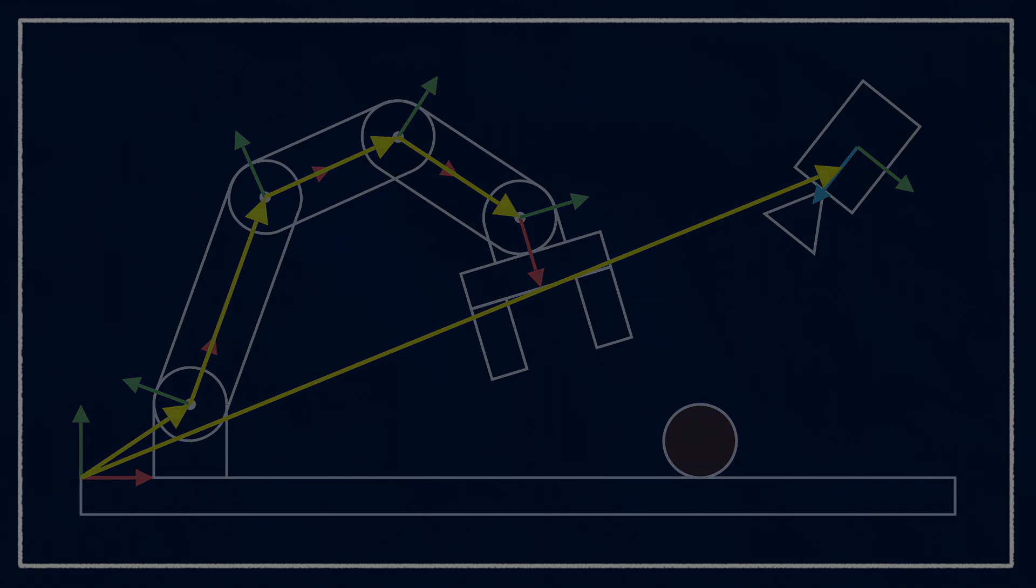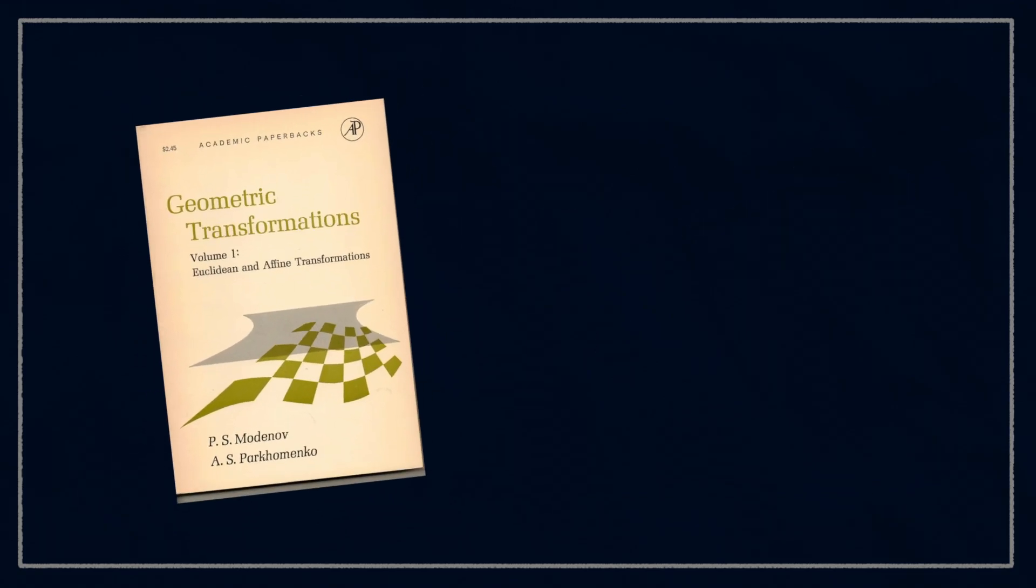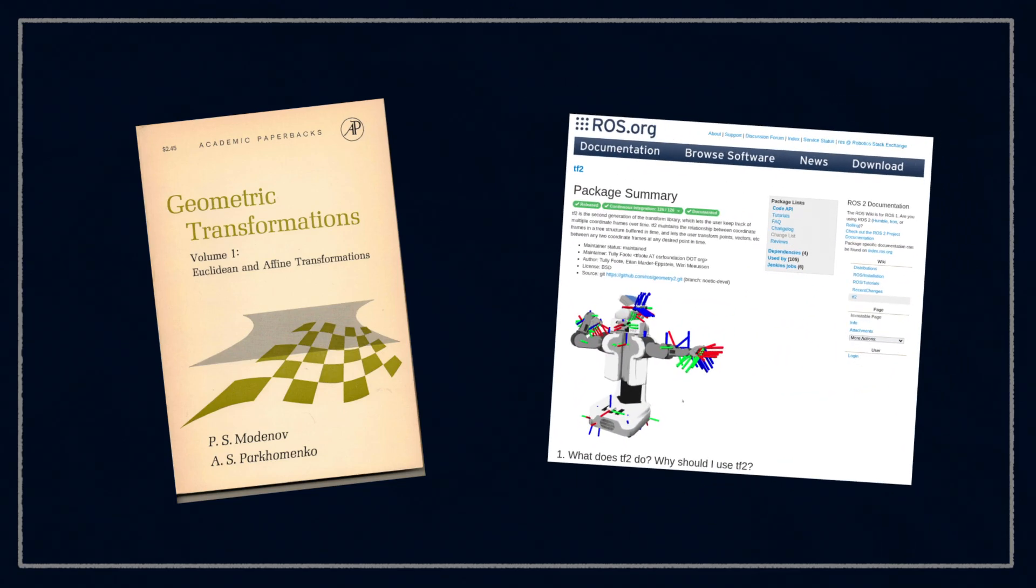At this point you have two options. You either learn the mathematics and implement it yourself, or you get a library like the ROS transform system and then eventually realize that to use it properly you need to understand the math anyway.